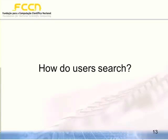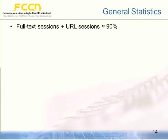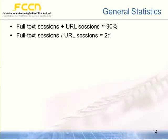The big question is: how do users search? The first thing we discovered was that users tend to submit two types of sessions — full-text sessions composed only of full-text queries, or URL-only sessions. They almost never mix the two types. The second thing we discovered was that users submit about double the number of full-text sessions compared to URL sessions, but both are frequently used. So it's important for a web archive to support both types of sessions.